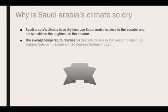Why is Saudi Arabia's climate so dry and hot? Saudi Arabia's climate is so dry because it is close to the equator and the sun shines the brightest on the equator. The average temperature reaches 24 degrees Celsius in the western region, 38 degrees Celsius in Jeddah, and 30 degrees Celsius in Jizan.